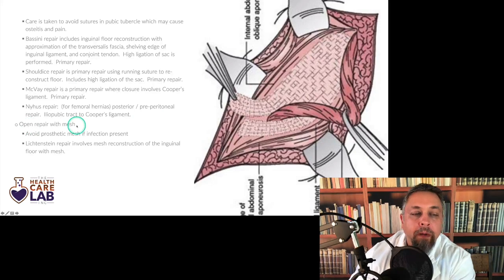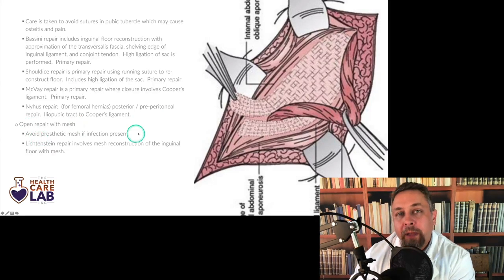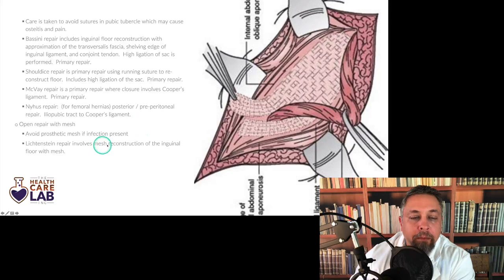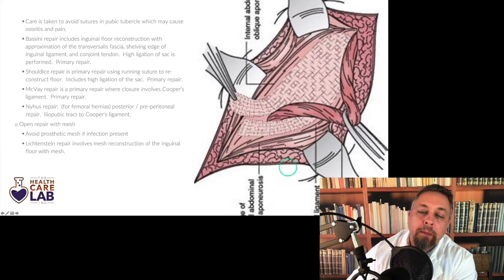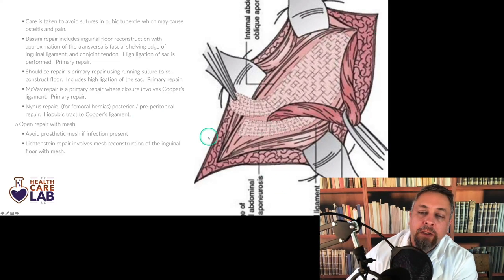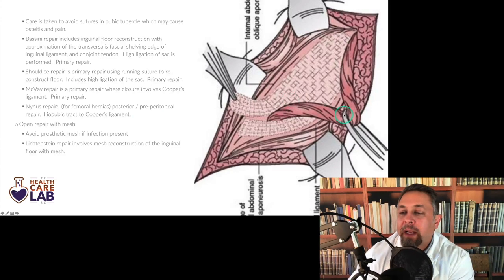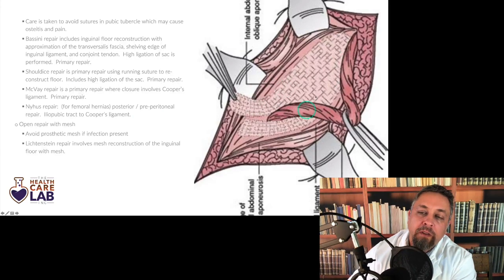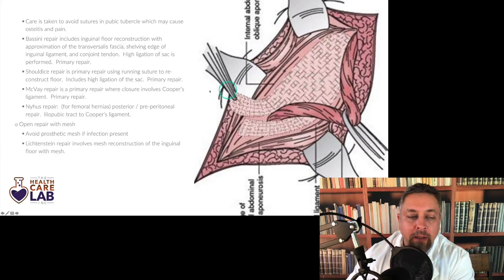Avoid prosthetic mesh if there's an infection present or the patient is high risk. A Lichtenstein repair involves mesh reconstruction of the inguinal floor. The cord is distracted out of the way and mesh is used to reconstruct the floor of the region. The external oblique has been opened already to get to the cord and is reflected laterally.